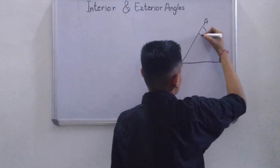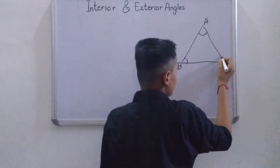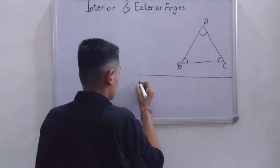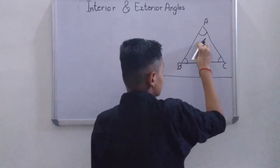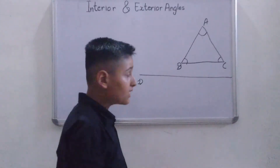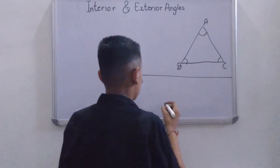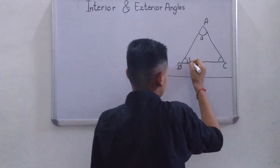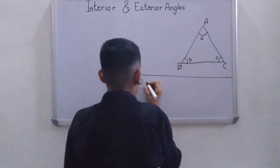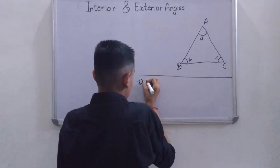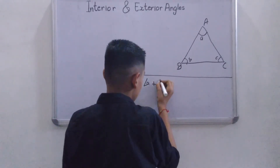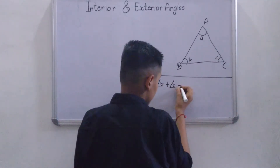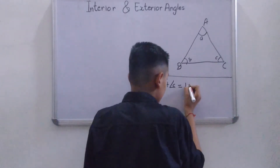What are interior angles? Interior angles are the angles which are inside a triangle. First, write the properties. The first property is the sum of all the interior angles is equal to 180 degrees — meaning Angle A plus Angle B plus Angle C is equal to 180 degrees.